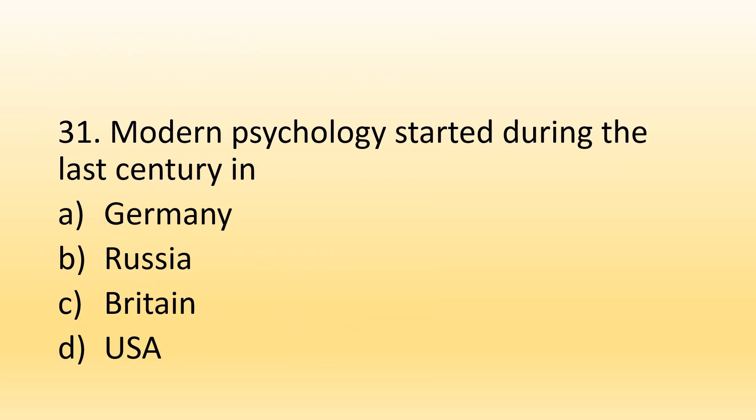Number 31. Modern psychology started during the last century in: Option A, Germany; Option B, Russia; Option C, Britain; Option D, USA. The right option is Option A, Germany. When Wilhelm Wundt established his laboratory in Germany, modern psychology was born and became scientific for the first time, because there was now a lab to perform experiments.